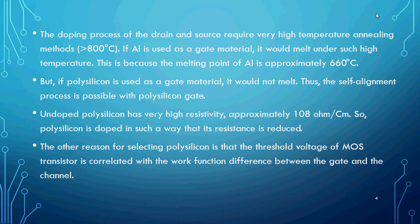If polysilicon is used as a gate material, it will not melt during the self-alignment process or the annealing process, because polysilicon has a higher heat-carrying capacity. One more thing — undoped polysilicon has very high resistivity, approximately 10⁸ ohms per centimeter square.